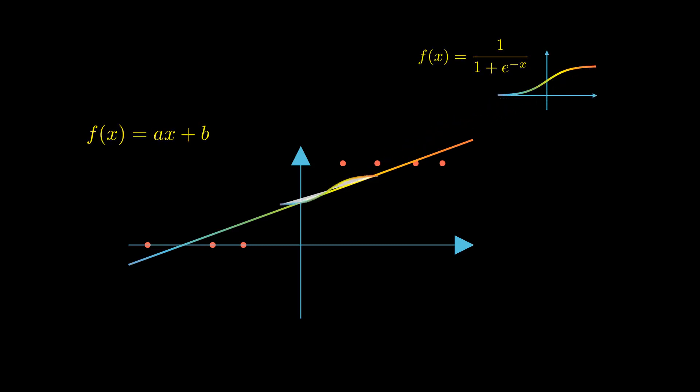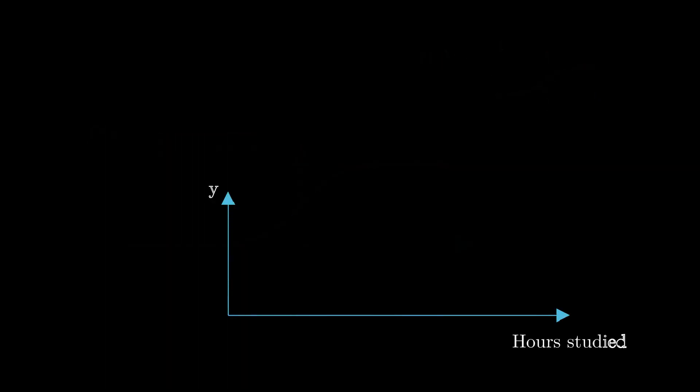As a quick recap, we constructed logistic regression by combining another machine learning method called linear regression with the logistic function. This creates the characteristic S-shape that logistic regression is known for. We also saw how it can be used to predict whether students would pass an exam based on how many hours they studied.